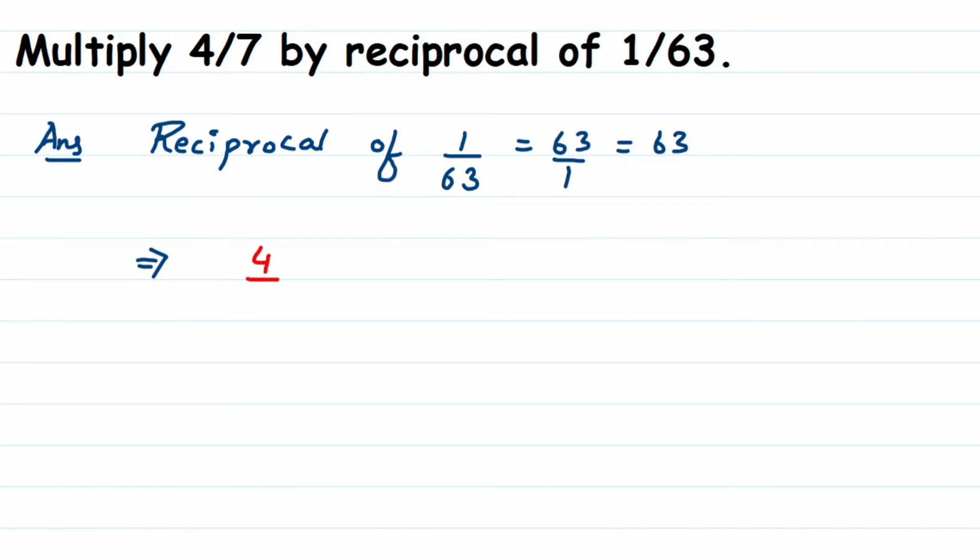We can write 4/7 multiplied by reciprocal of 1/63, which is 63. Now we can cancel 7 and 63. This is 7 ones and 7 nines are 63.